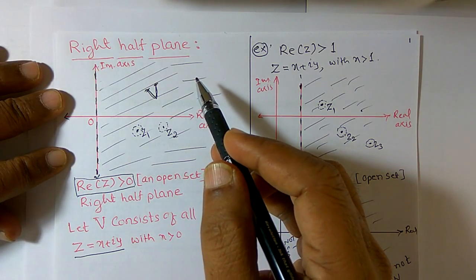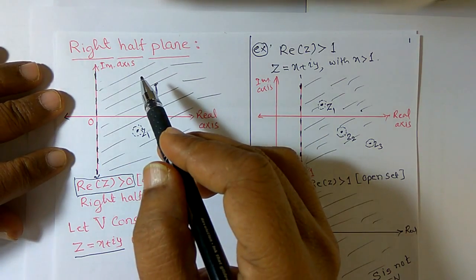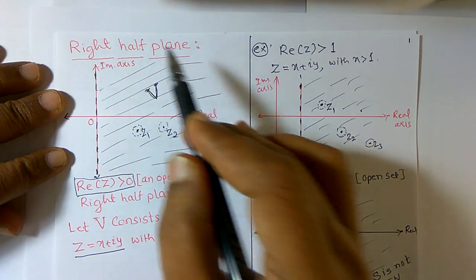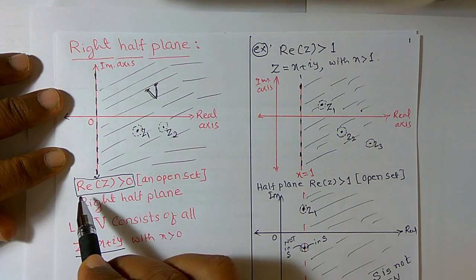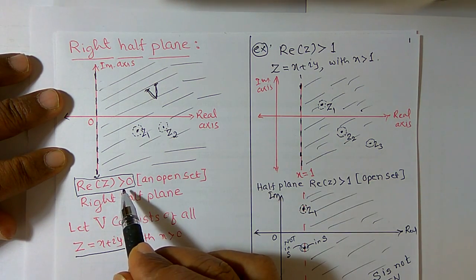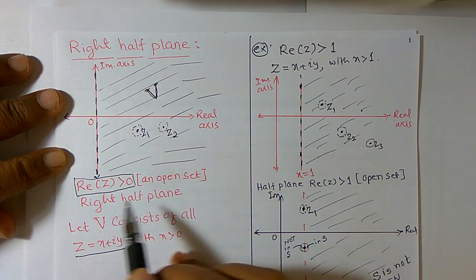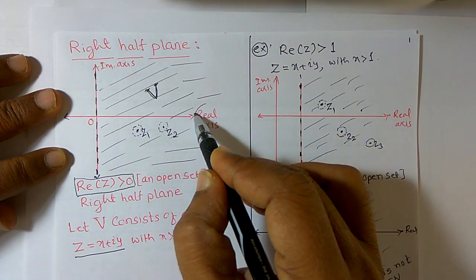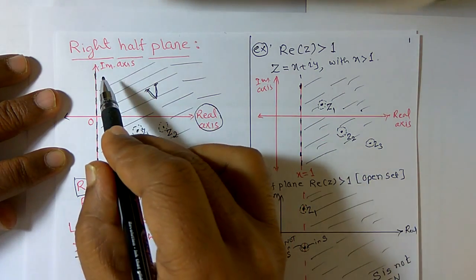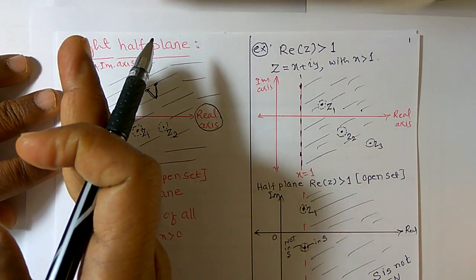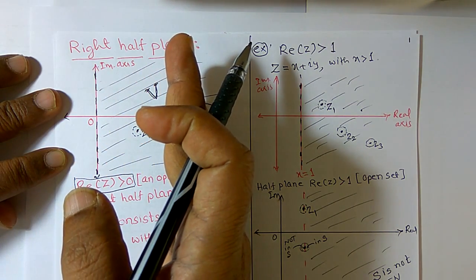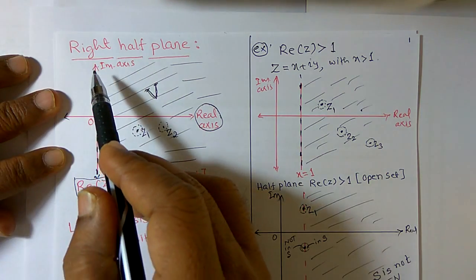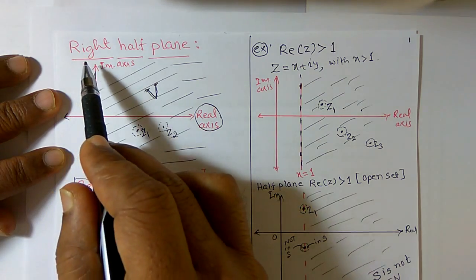Hello friends. In the case of complex variables, sometimes we will use the word 'right half plane.' What do you mean by right half plane? Or sometimes we will use 'real part of z is greater than 0 is an open set.' We are already familiar with: the x-axis is called the real axis and the y-axis is called the imaginary axis. The right-hand side of the imaginary axis is called the right half plane, and the left-hand side is called the left half plane.